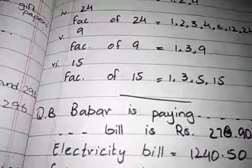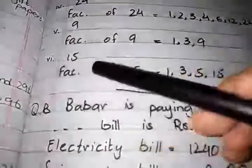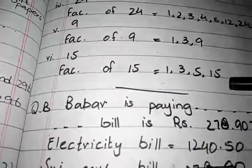Then, the factors of 9 are 1, 3, and 9, and the factors of 15 are 1, 3, 5, and 15.